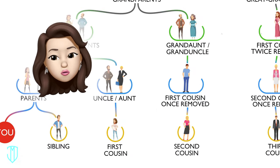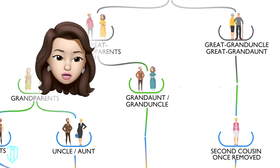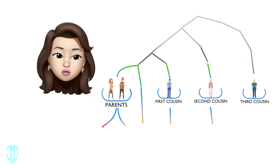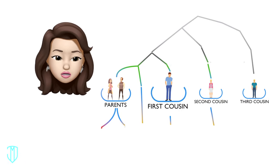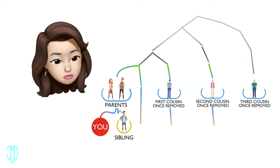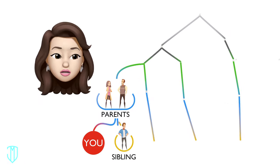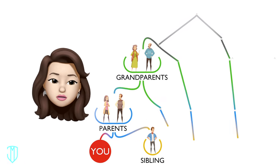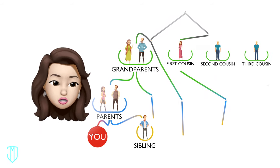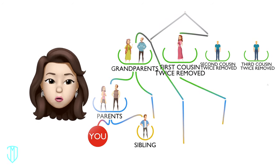But what's a cousin once removed or twice removed? Don't worry, it doesn't mean they got kicked out of the family. Your parents' first, second, and third cousins are also your first, second, and third cousins, but once removed. They're once removed because they're one generation away from you. The pattern is the same for your grandparents. Your grandparents are two generations from you, so your grandparents' first, second, and third cousins are also your first, second, and third cousins, but twice removed.